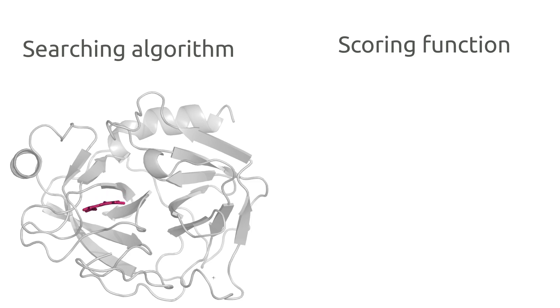There are many searching algorithms developed, some are more precise than others, but all of them are meant to search within the conformational space for the more stable complex between the two partners.